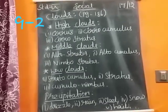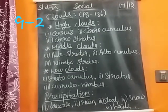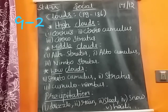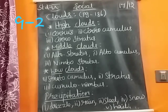Altocumulus are round patches at high altitude, at heights of 2500 to 3000 meters, associated with fair and clear weather. Stratus are dense, low-lying fog-like clouds associated with rain or snow.